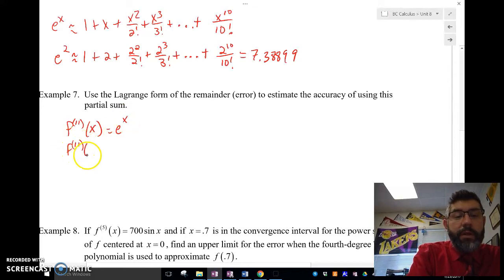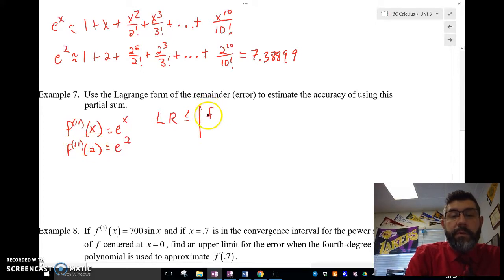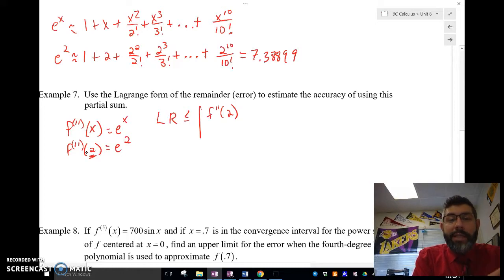So, the 11th derivative of 2 is e to the 2. Now, I'm using the Lagrange remainder is going to be less than or equal to the absolute value of the 11th derivative of 2. Now, why am I using 2? Remember that this value had to be the maximum value within my center and my value. So, this is my interval that I'm looking at, because this is my center, this is c, and this is my value x.